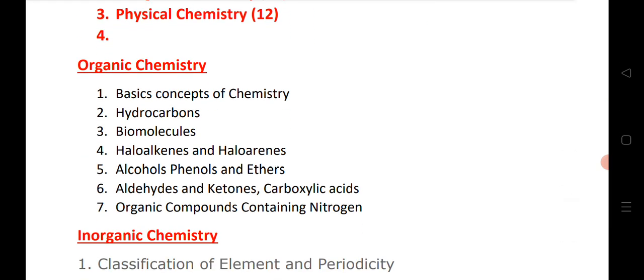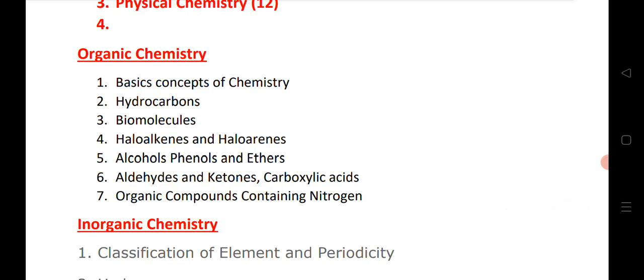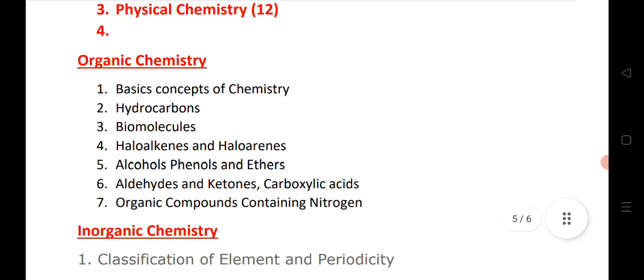Let us see the chapters in organic chemistry: basic concepts of chemistry, hydrocarbons, biomolecules, haloalkanes and haloarenes, alcohols, phenols, ethers, carboxylic acids, ketones and aldehydes, organic compounds containing nitrogen. We know that in IPE, mostly 70% of the syllabus from nitrogen is related, only 30% is remaining, so practice those questions we have given.